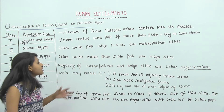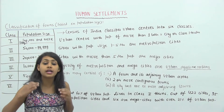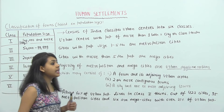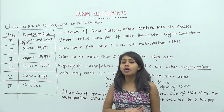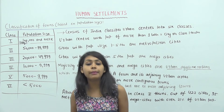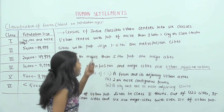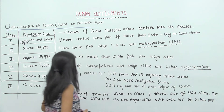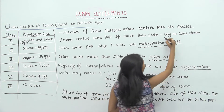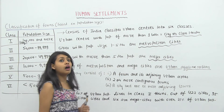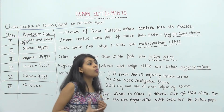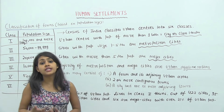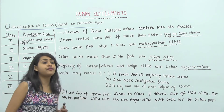Beyond just being a city, cities or Class 1 towns with a population size of 1 to 5 million are called metropolitan cities. Cities with more than 5 million population are called mega cities. So to summarize: an urban center with more than 100,000 population is a city; a city with 1 to 5 million population is a metropolitan city; and a city with more than 5 million population is a mega city.